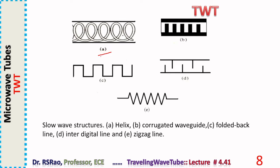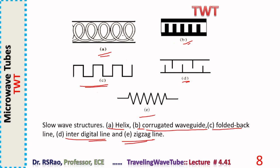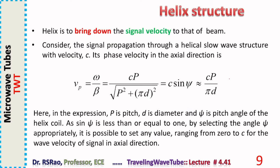Several slow wave structures are shown: A is a helix, B is a corrugated waveguide, C is a folded backline, D is an interdigital line, and E is a zigzag line. These are all different slow wave structures used in the design of traveling wave tubes.